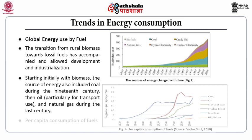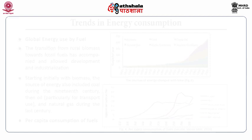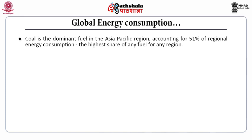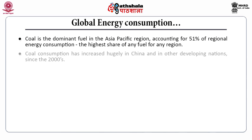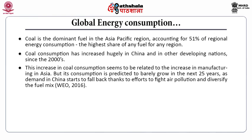There is a shift from biomass to oil to natural gas. In this figure, you can see the per capita consumption of fuels. Coal is the dominant fuel in the Asia-Pacific region, accounting for 51% of the regional energy consumption — the highest share of any fuel for any region. The coal consumption has increased hugely in China and other developing nations since 2000, related to the increase in manufacturing in Asia. But its consumption is predicted to barely grow in the next 25 years, as demand in China starts to fall back due to efforts to fight air pollution and diversify the fuel mix.